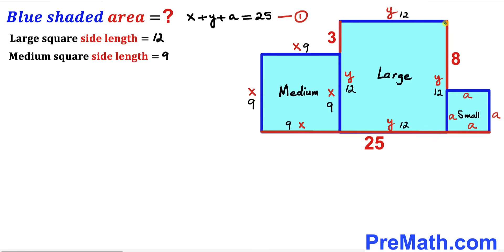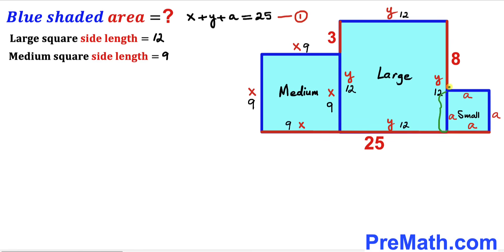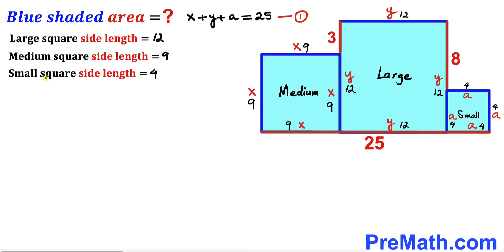Finally, let's focus on this side. We know the whole side length is 12 and this vertical segment is 8 units, so this tiny side length is 12 minus 8 equals 4 units. Therefore the side length of this small square turns out to be 4 units, so all sides of this small square are 4 units.